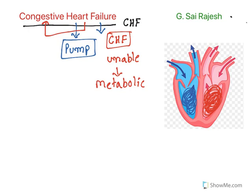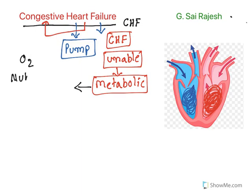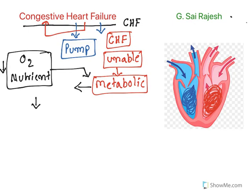Heart is unable to pump the blood to meet the metabolic needs of tissues. What do we mean by metabolic needs? When blood is pumped, it carries oxygen as well as nutrients. By using these oxygen and nutrients, all the tissues carry out their metabolism. During heart failure, blood supply is reduced, so oxygen and nutrient supply is reduced, affecting the metabolic efficiency of tissues.